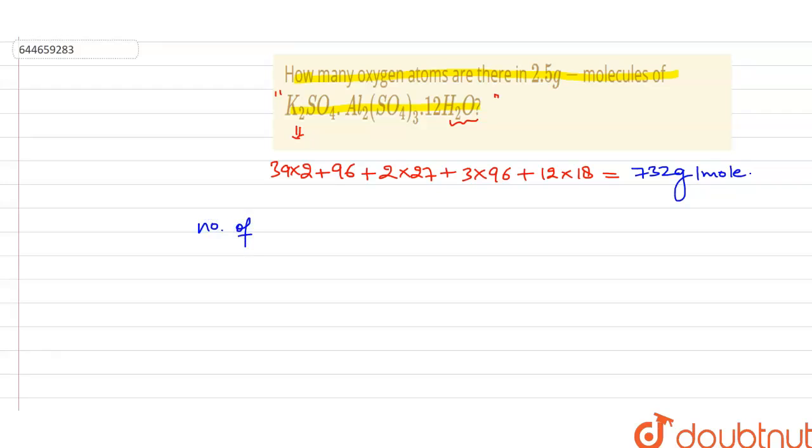Now here we have to find firstly the number of atoms of oxygen present in one molecule of this salt. So here we are having how many? It will be 4, it will be 4, 3 is 12, and it will be 12.